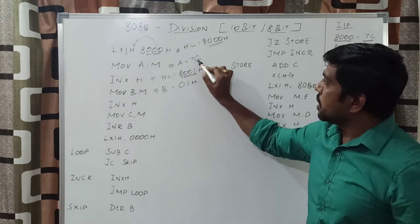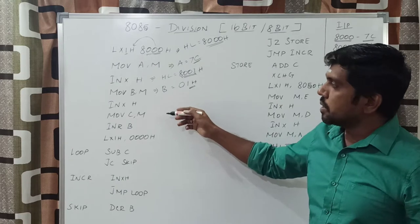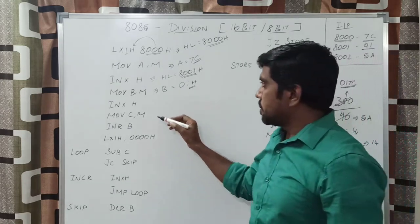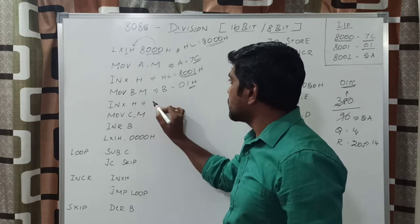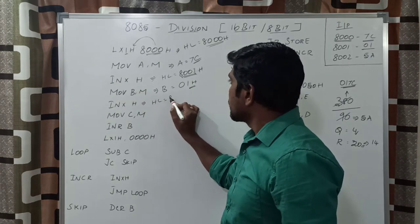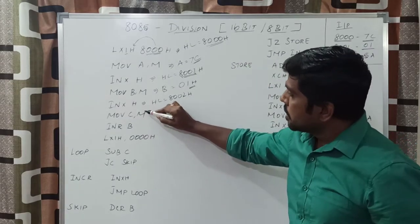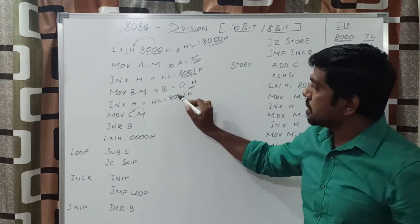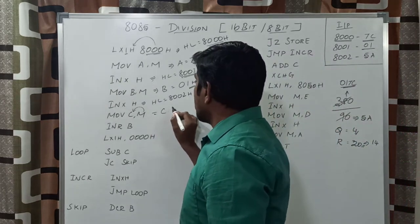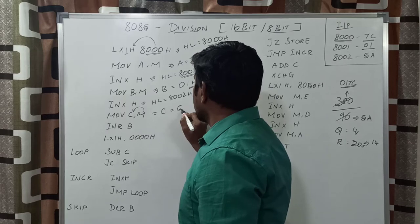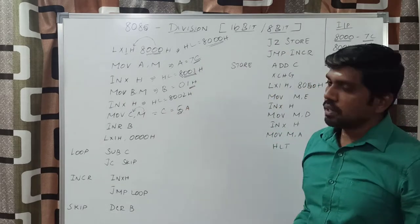So far, you have obtained the lower 8-bit value and the higher 8-bit value. The next instruction gets the denominator value. Increment the HL pair content — after incrementing, the HL pair becomes 8002h. Next, MOV C, M: whatever value is present in that memory location is transferred to the C register. The denominator value is 5Ah, so 5Ah is transferred to the C register.